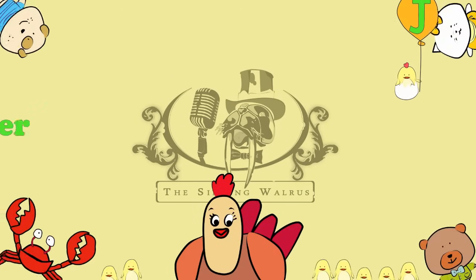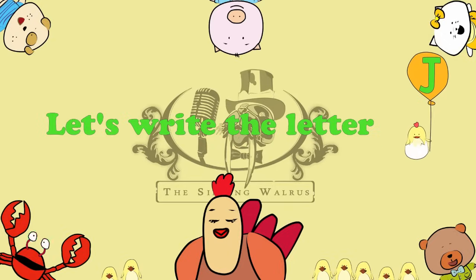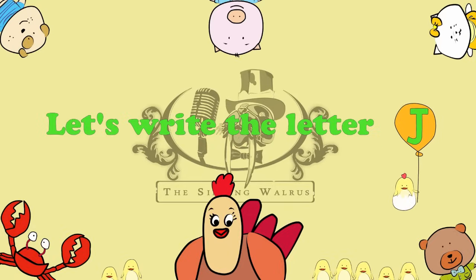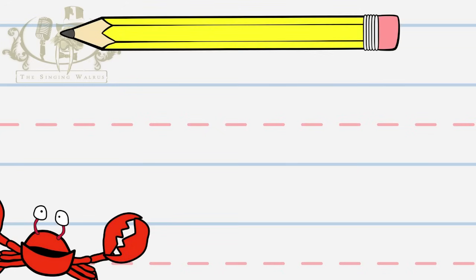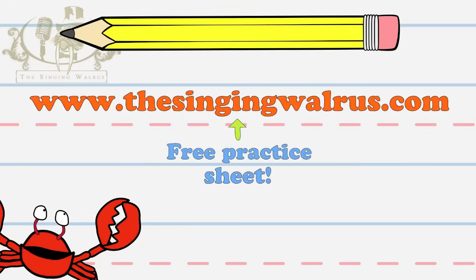The Singing Walrus. Let's write the letter J! Hey kids! Now we're going to write the letter J, as in Jaguar. J-J-Jaguar. You'll need a practice sheet and a pencil. Go to our website to download a free practice sheet.